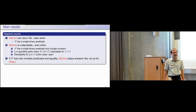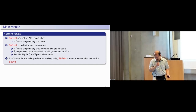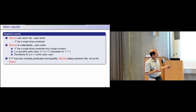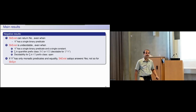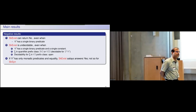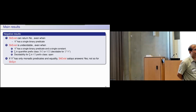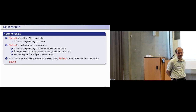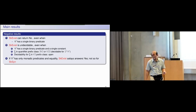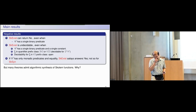Here is a very interesting situation: if the vocabulary has only monadic predicates and equality, there always exists a Turing machine for any formula. So Skolem-exists always answers yes. But we cannot algorithmically generate the Turing machine — Skolem-synthesis is not decidable in this case.